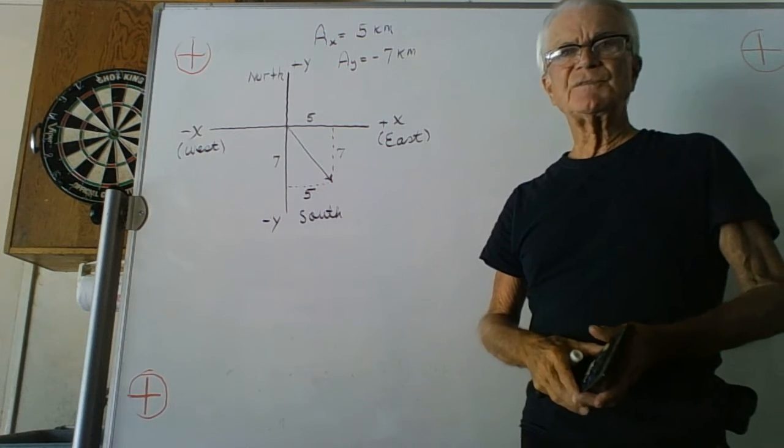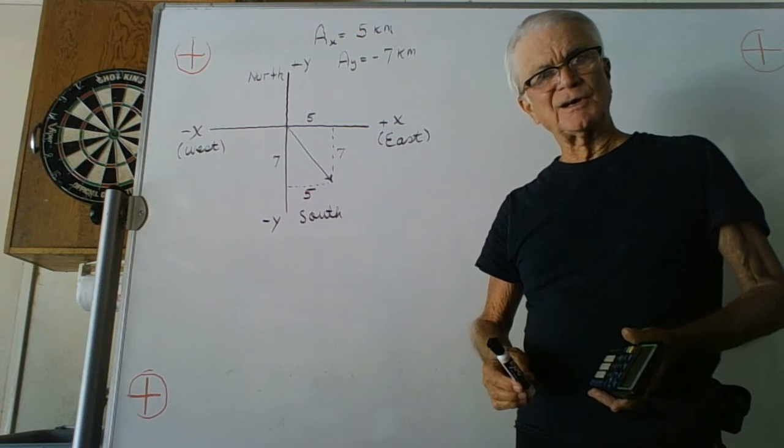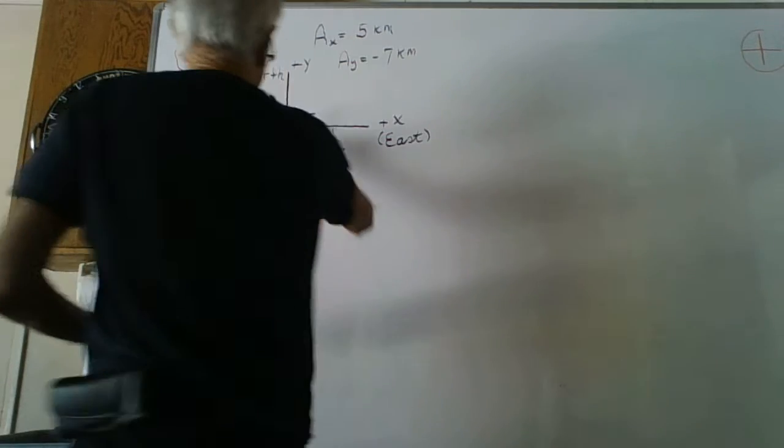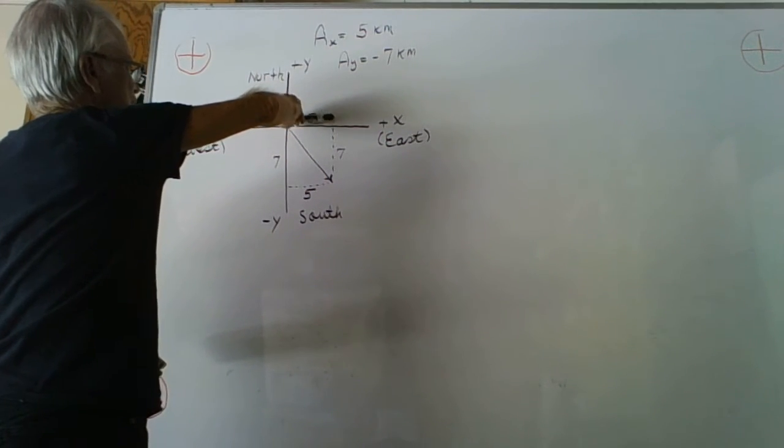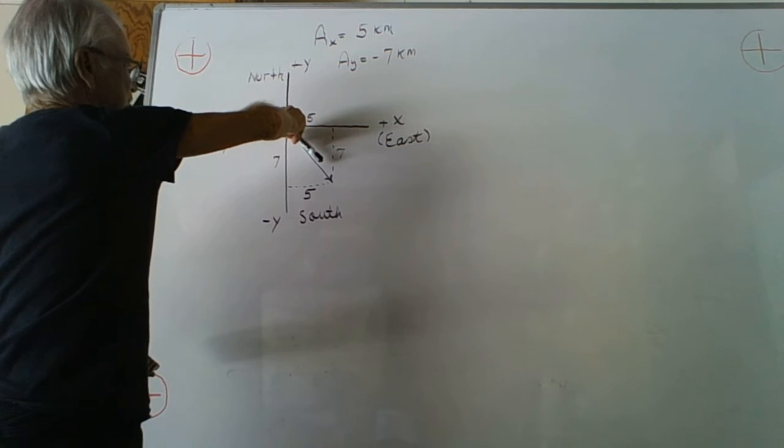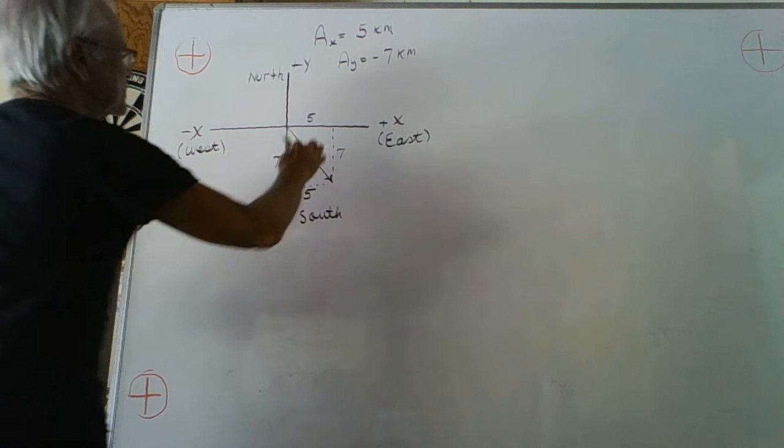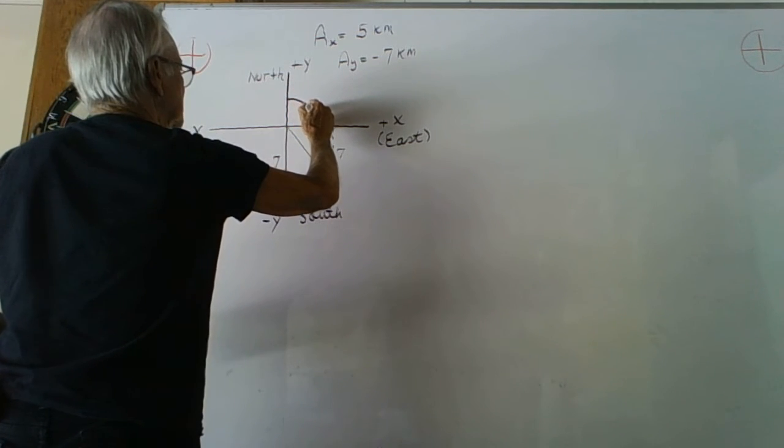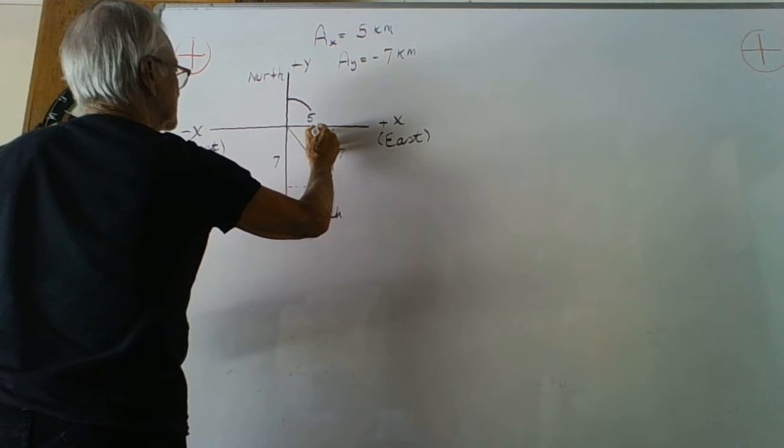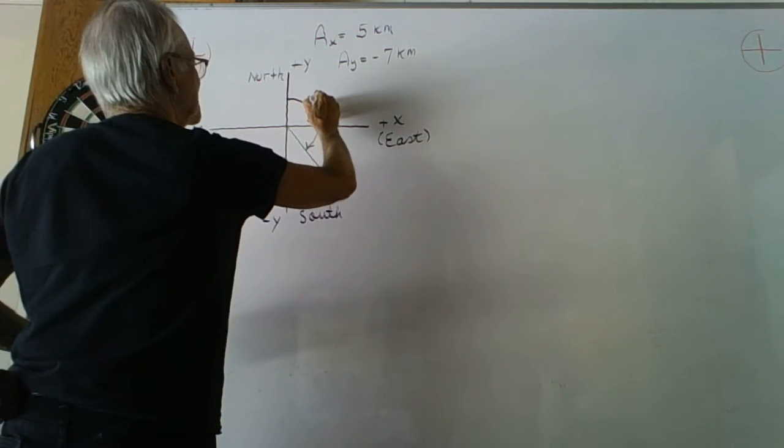What we're looking for is the angle of the arc that begins with north and travels around to the direction of the displacement arrow. So the angle we're looking for is that one, theta.